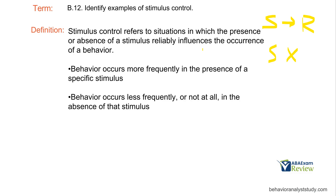Think about when you show up to your session. How does the client react? Are they happy? Are they excited? Are they on their best behavior? Then you have stimulus control over those behaviors. If they're reacting in other ways — running away or not being compliant — then stimulus control is over those behaviors, and we need to change it to where stimulus control is over the behaviors we want to see. Behaviors occur more frequently in the presence of a specific stimulus. We can also affect latency and duration, or behaviors occur less frequently or not at all in the absence of that stimulus.